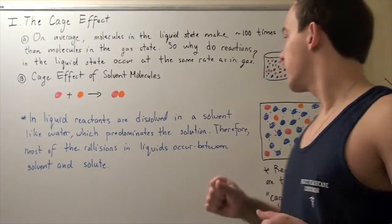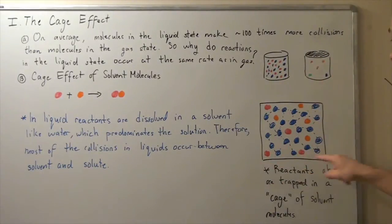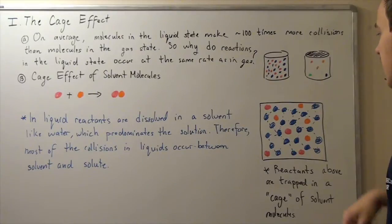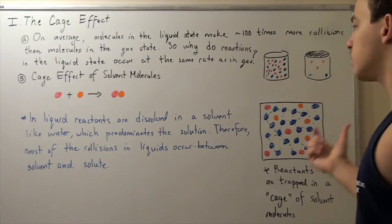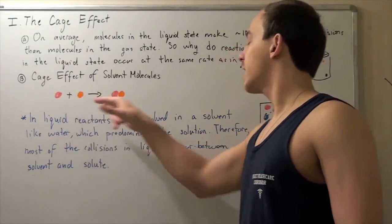Now let's look at this cage effect. Suppose we have our system where the blue molecules are water solvent molecules, and the red and orange molecules are the molecules spoken about here, the reactants.